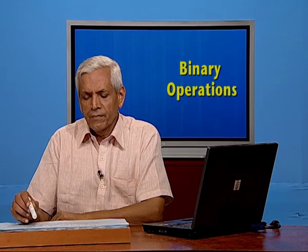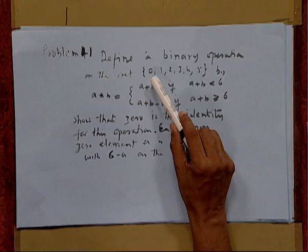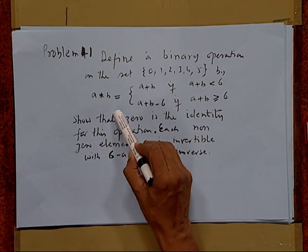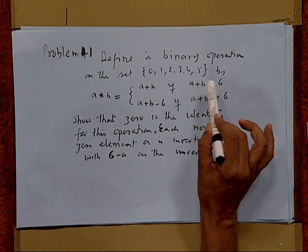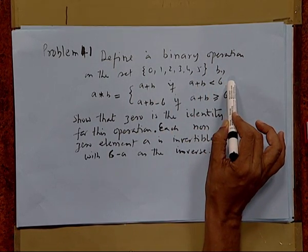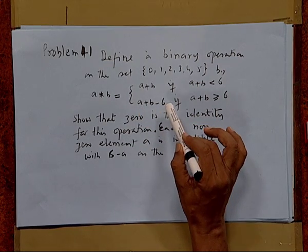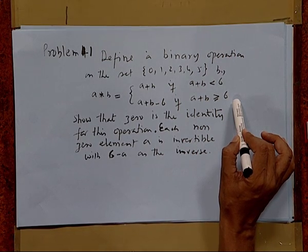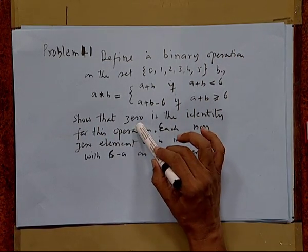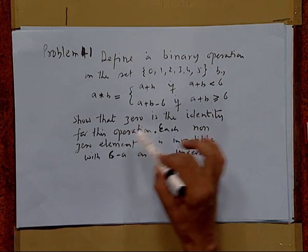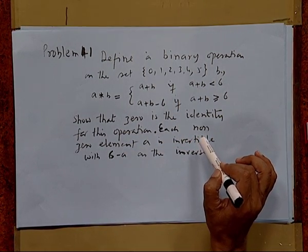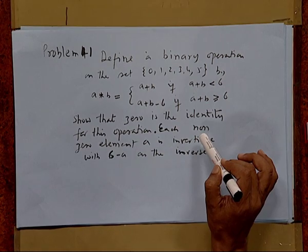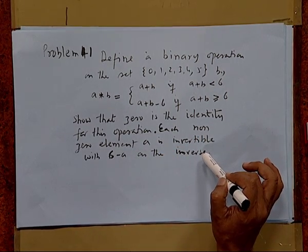Now take the example. We are given the set {0, 1, 2, 3, 4, 5} and the operation is defined as: A star B equals A plus B if A plus B is less than 6, while A star B equals A plus B minus 6 when A plus B is greater than or equal to 6. We have to show that 0 is the identity for this operation and every non-zero element is invertible with 6 minus A as the inverse.